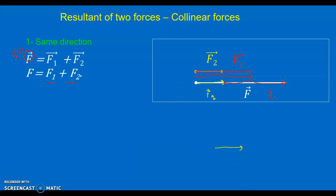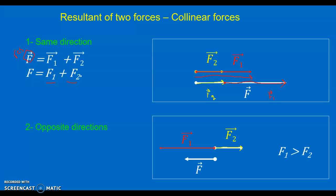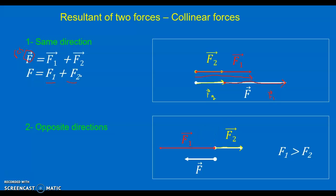Resultant of two collinear forces — collinear means parallel: both horizontal, both vertical, or both oblique making the same angle with the horizontal. There are two cases: either these collinear forces have the same direction, or they have opposite directions. Same direction means both are directed to the right, for example as shown here; opposite directions means one is to the right and one is to the left, though both are collinear and horizontal.